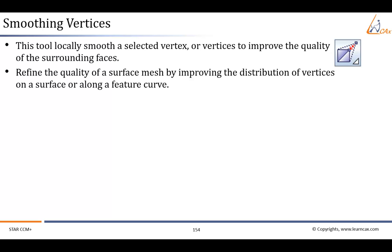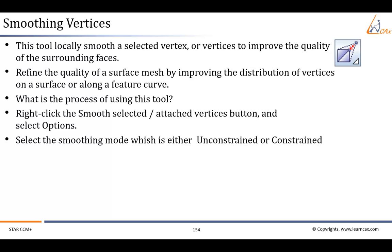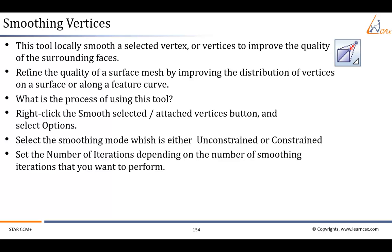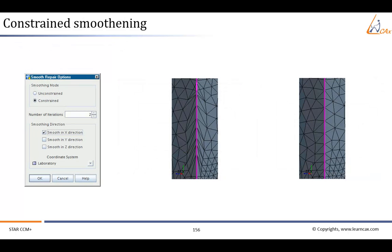Let us see the process of using this tool. First, right-click the 'Smooth Selected or Attached Vertices' button and select Options, then select the smoothing mode: unconstrained or constrained. After that, set the number of iterations depending on how many smoothing iterations you want to perform. Finally, click OK. The figure shows an example of unconstrained smoothing, where there is no restriction on the vertex while smoothing. The next figure shows an example of constrained smoothing, where all the vertices are constrained to the x direction.